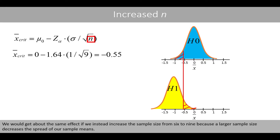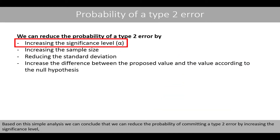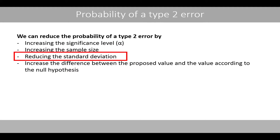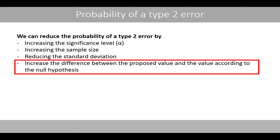We will get about the same effect if we instead increase the sample size from 6 to 9, because the larger sample size decreases the spread of our sample means. Based on this analysis, we can conclude that we can reduce the probability of committing a type 2 error by increasing the significance level, or by increasing the sample size, or by reducing the standard deviation. In addition, we can reduce the probability of a type 2 error by increasing the difference between the proposed value and the value according to the null hypothesis.